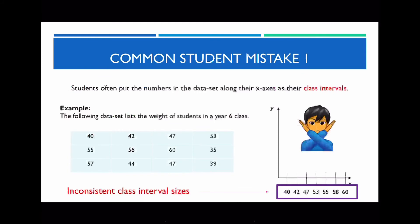The first common mistake I often see is students putting the numbers directly from the data set along the x-axis as their class intervals — for example, 40, 42, 47, 53 and so forth. The reason this is incorrect is that the scale becomes inconsistent: this gap goes up by two, but the next one goes up by five. This is inconsistent and therefore incorrect. If you were to do this correctly, go up by fives consistently. Also, since the data doesn't start at zero, include a little zigzag when you're skipping values.